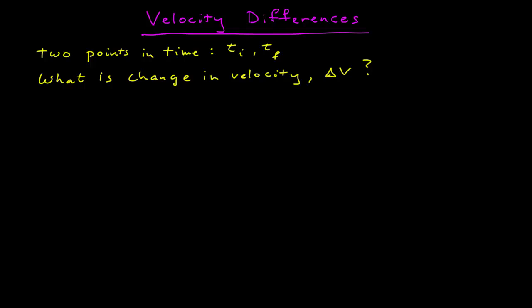So, velocity differences. At this point, I'm going to assume we have two points in time: some initial time t sub i and some final time t sub f. And I want to ask the question: what is the change in velocity delta v during this time interval?